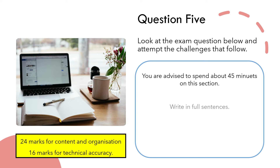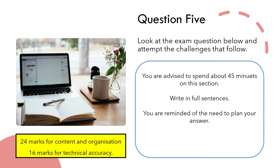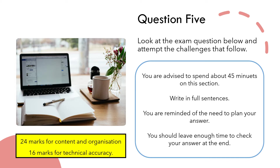A typical question advises you to spend about 45 minutes on this section — timing is key. You need to ensure you're spending enough time on section B and not using it all on section A. You're advised to write in sentences, to plan your answer, and to leave enough time to check your answers at the end. When it says write in full sentences, it seems obvious but many people forget under exam pressure and make silly mistakes.